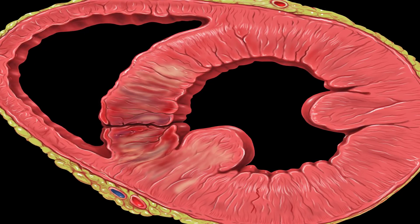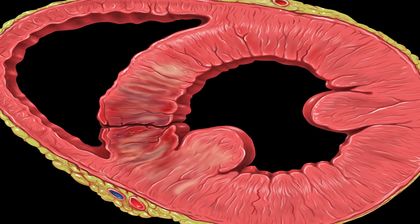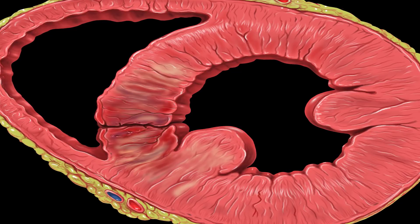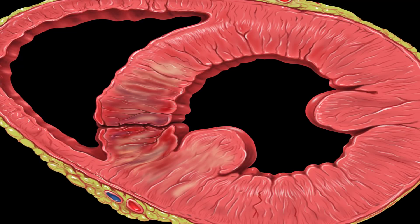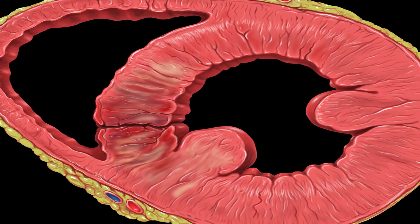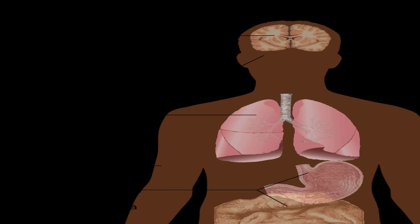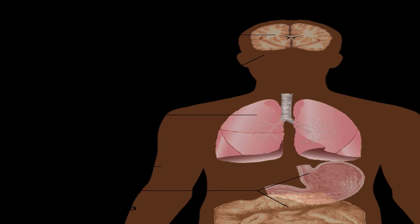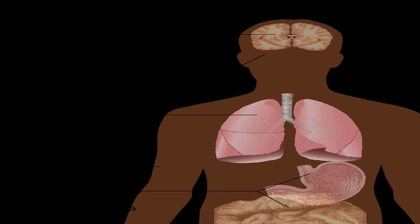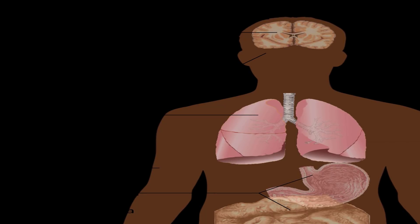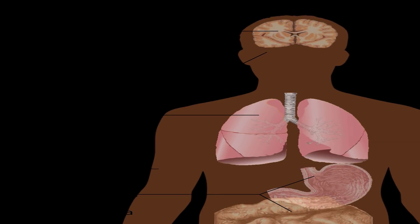When left untreated, the streptococcus bacteria that cause strep throat and scarlet fever can also cause rheumatic heart disease. This disease can seriously and permanently damage the heart valves and heart muscle by causing heart muscle inflammation known as myocarditis. According to Seattle Children's Hospital, rheumatic fever typically occurs in children ages 5 to 15, but the symptoms of rheumatic heart disease usually don't show up for 10 to 20 years after the original illness. This disease can be prevented by promptly treating strep throat with antibiotics.